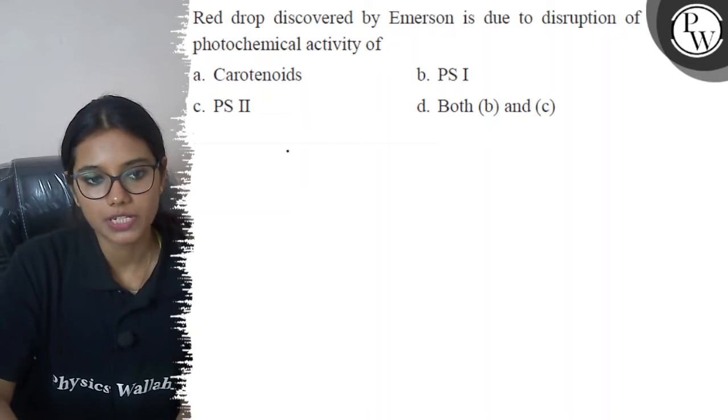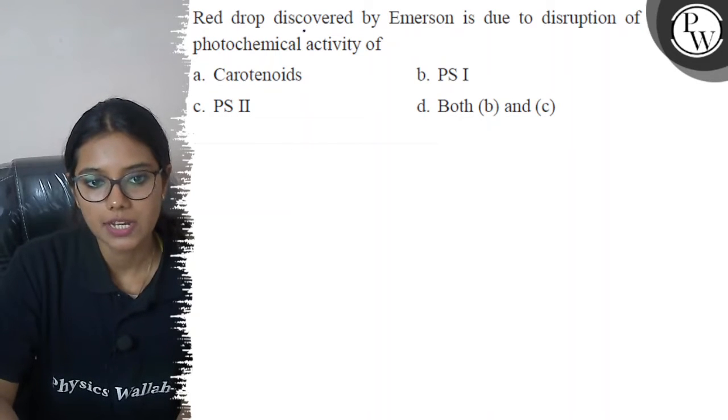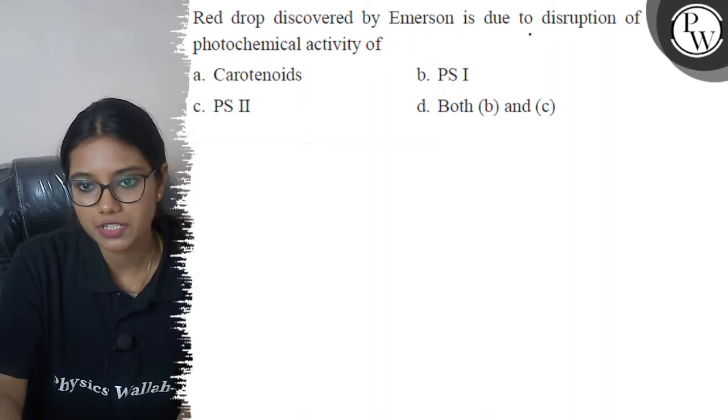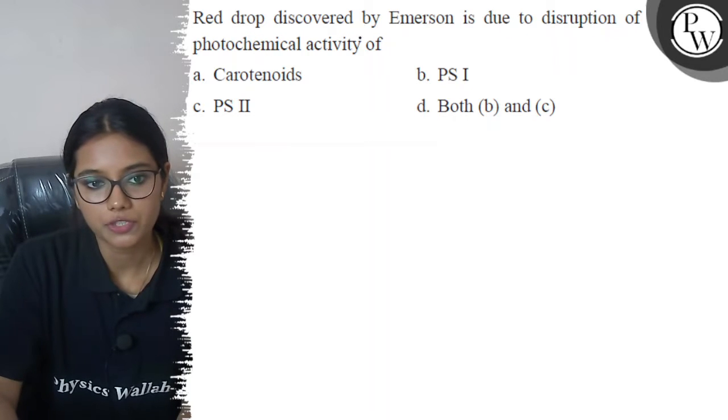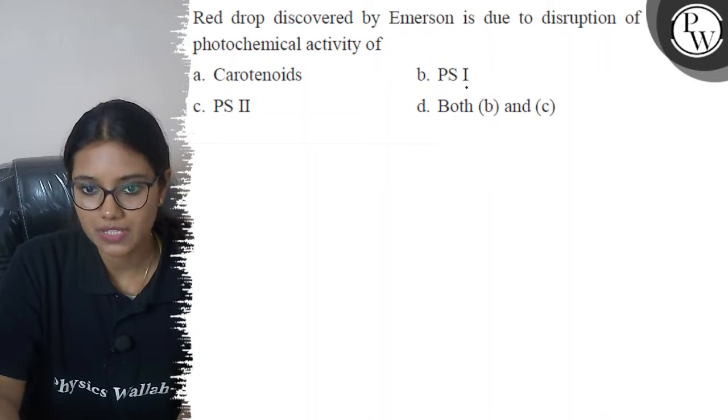Hello, let's see the question. The question is, red drop discovered by Emerson is due to disruption of photochemical activity of option A carotenoids, option B PS1.